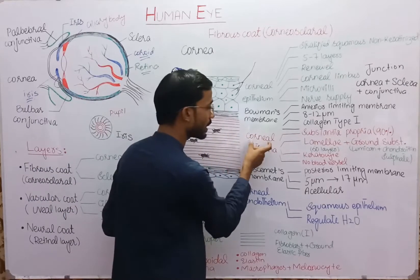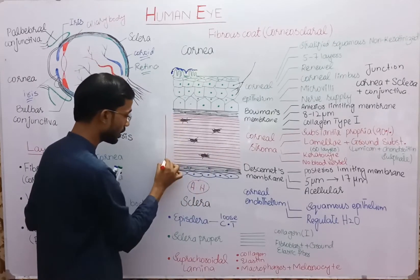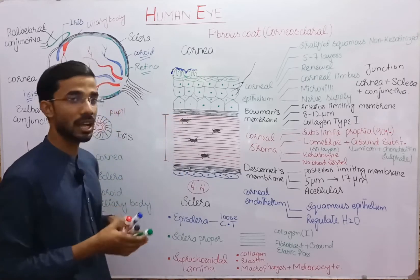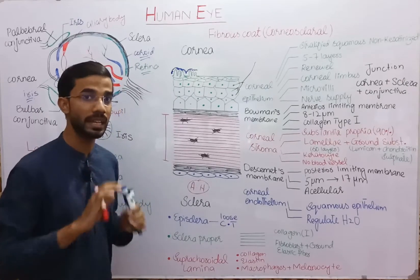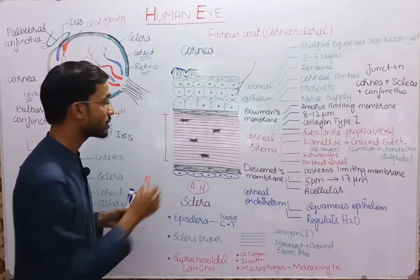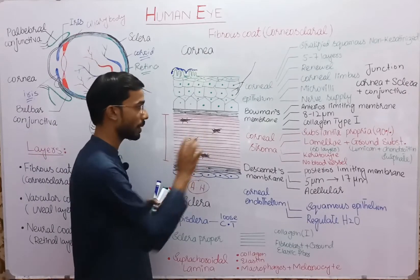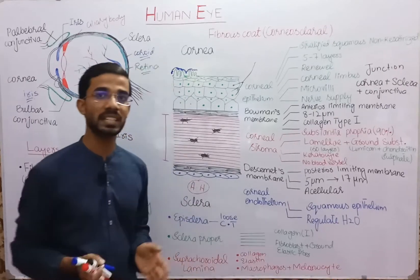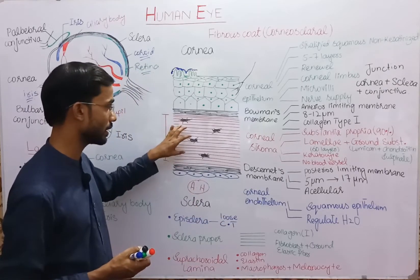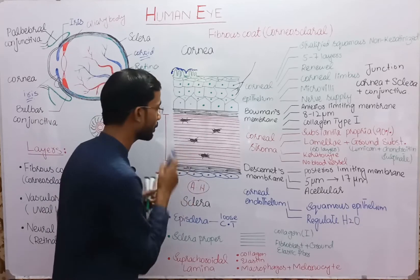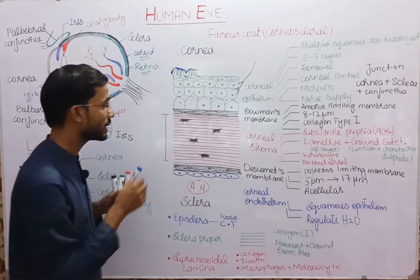The next layer is the corneal stroma, which is the thickest layer, also called substantia propria. It has laminae — approximately 60 layers of collagen are present. A ground substance is also present between them, containing lumican and chondroitin sulfate. The cells present between the collagen fibers are keratocytes.